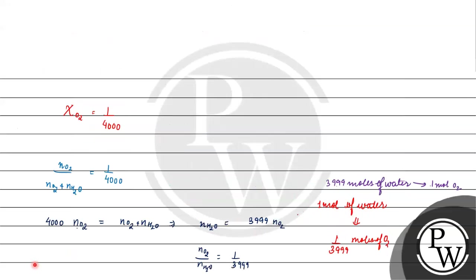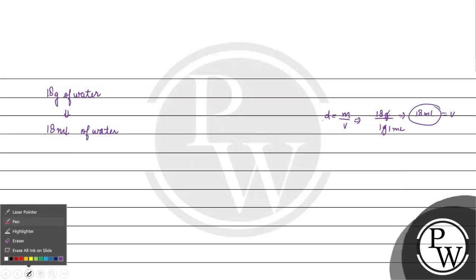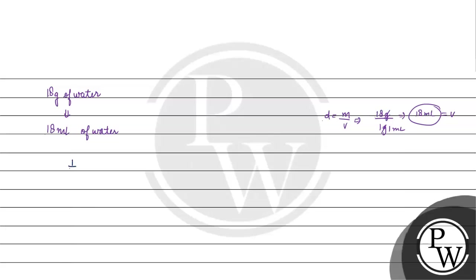We took 1 mole of water, which means 18 grams of water. If we want to write volume for 18 grams of water, we get 18 mL of water because the density of water is 1 g per mL. So mass divided by density: 18 g by 1 g per mL gives us 18 mL. We have 18 mL water, so moles of oxygen are 1 by 3,999 divided by 18 into 10 raised to the power minus 3.